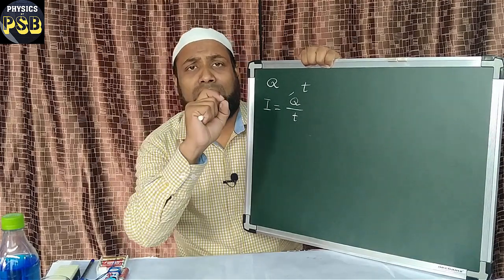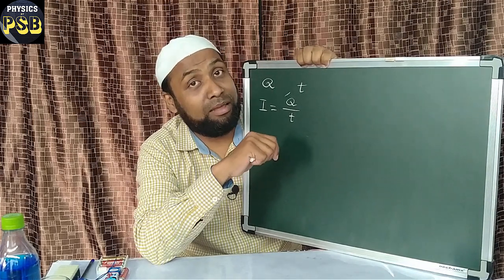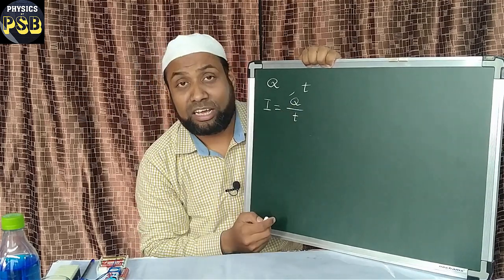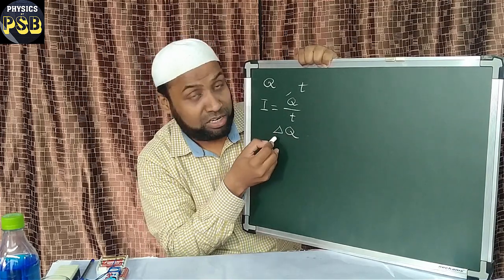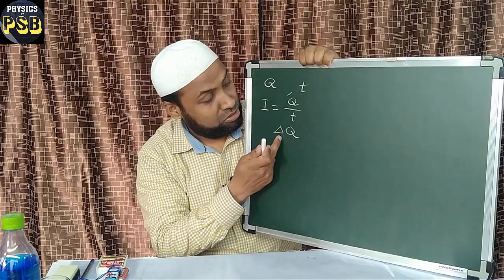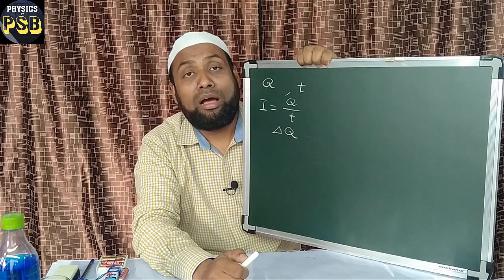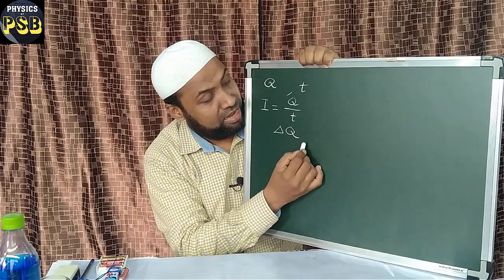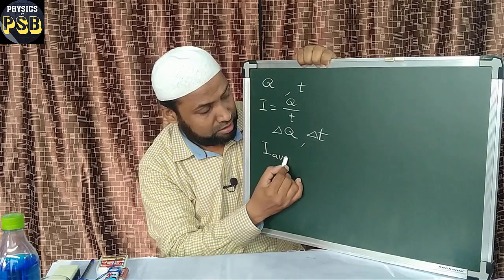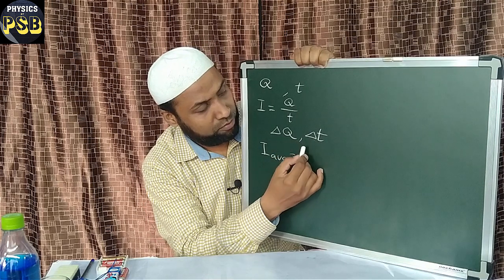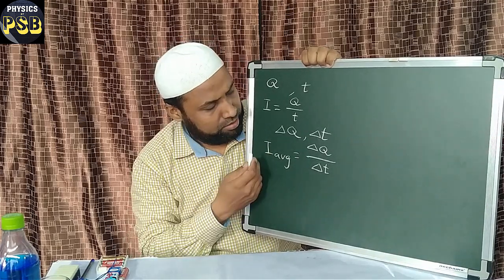However, the number of charges flowing through a conductor is not constant — it may vary with time. In such a case, instead of Q we use delta Q, where delta represents a change. So delta Q is the number of charges flowing through a cross-sectional area of a conductor in a time delta T. Then average current is written as delta Q divided by delta T.